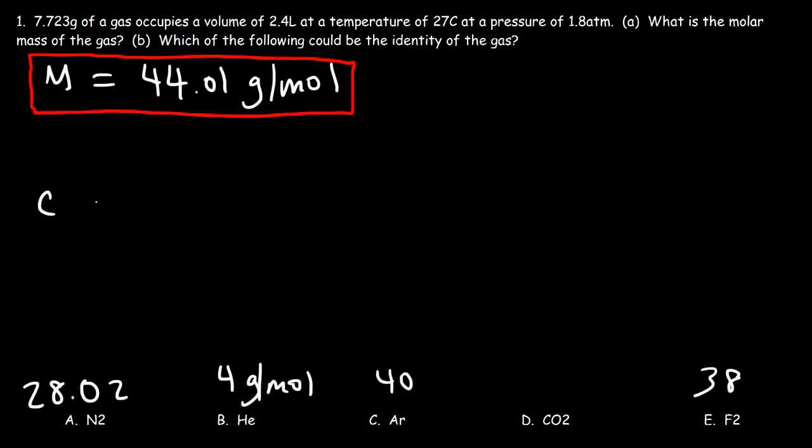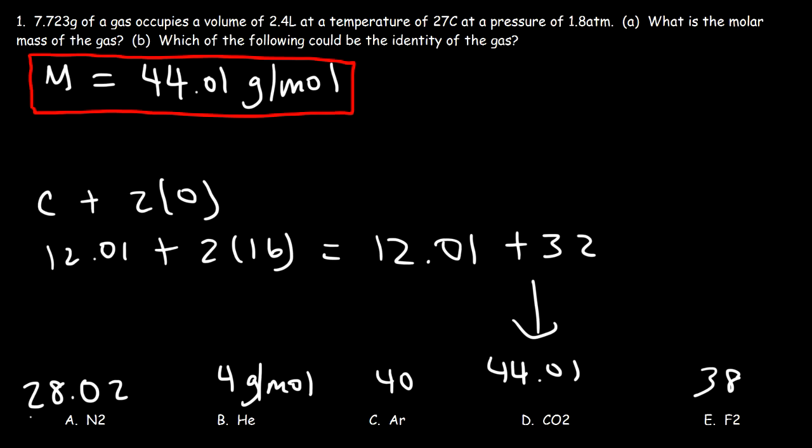But CO2, that's carbon plus 2 oxygen atoms, that's 12.01 plus 2 times 16, which is 12.01 plus 32. This one has a molar mass of 44.01. So based on the options listed, the identity of the gas has to be carbon dioxide.